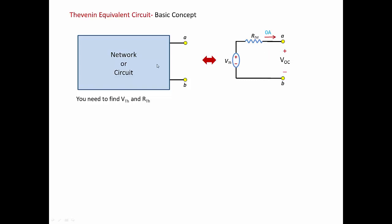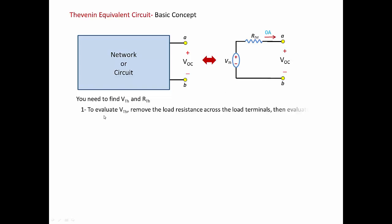To apply this concept to the original circuit: once you remove the load resistance, just go ahead and measure the voltage VOC across the open terminals. The step is: remove the load resistance, measure VOC, and it gives you V-Thevenin. Why does it work? Because if we remove the load resistance, VOC is the same as V-Thevenin. To evaluate V-Thevenin, remove the load resistance across the load terminals and then evaluate VOC. V-Thevenin equals VOC.